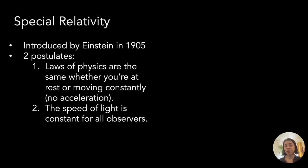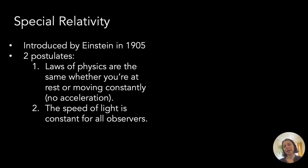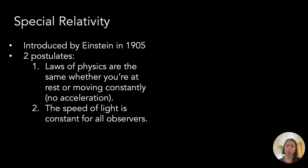The first idea of special relativity is that the laws of physics are the same whether you're at rest or moving at a constant speed with no acceleration. Imagine you're in a car with blacked-out windows — you can't tell whether you're at rest or moving at a constant speed. You could try small physics experiments, but you can't tell, because the laws of physics are the same. As soon as you start to accelerate, you can tell — but without acceleration, special relativity says we can't. The second idea is that the speed of light is constant for all observers, no matter how fast you're going.